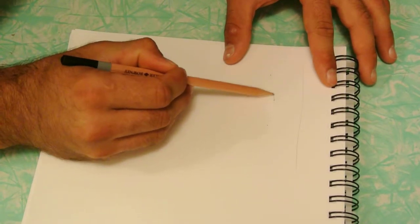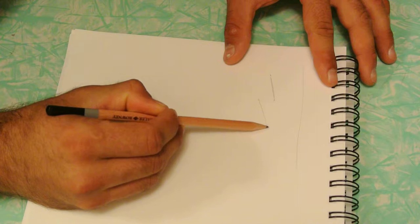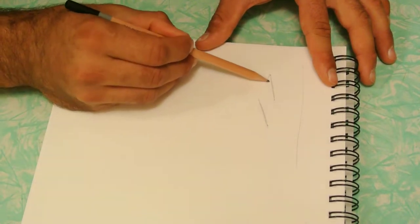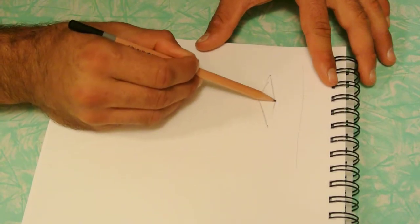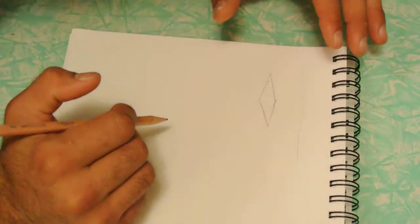Now you're going to just connect these dots. Again, they don't have to be perfect. There you go. So there's the top of your cube.